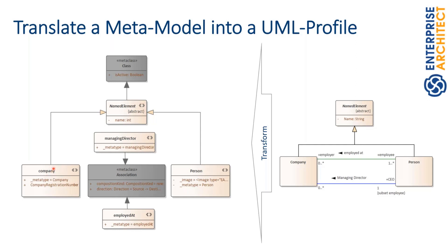The concrete UML profile has additional element types — Company, Person — and two connectors: ManagingDirector and EmployedAt. But we can use ManagingDirector and EmployedAt in potentially unwanted ways. For instance, with a use case and an actor we can also use an association, and because there is a stereotype for associations, we could use ManagingDirector between any elements. So there's no further constraint yet.